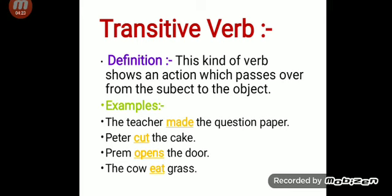Now, transitive verb. Let's see its definition. This kind of verb shows an action which passes over from the subject to the object. Transitive verbs are directly connected with the object and make a complete sense. Let's see some examples. 'The teacher made the question paper.' 'Peter cut the cake.' 'Prem opens the door.' 'The cow eats grass.' Here, made, cut, opens, and eat are the transitive verbs which are directly connected to the object.